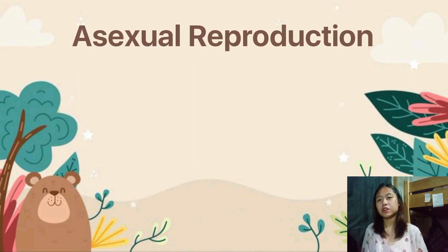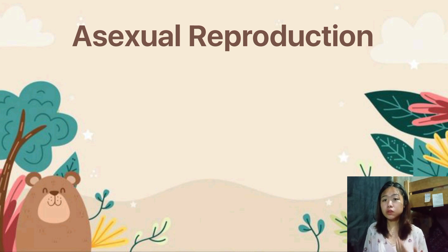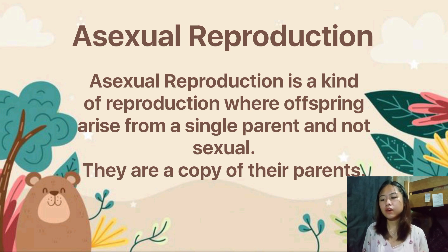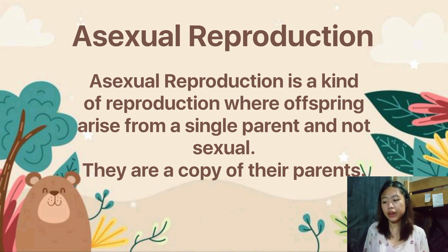Let's focus more on asexual reproduction. Let us know first what asexual reproduction is. Asexual reproduction is a kind of reproduction where offspring arise from a single parent and does not involve sex cells. It doesn't require both male and female reproductive cells. The offspring are clones, or a copy of their parent.